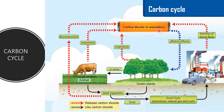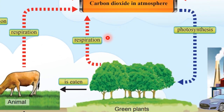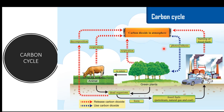During respiration, all plants and animals release carbon dioxide back to the air. In short, photosynthesis removes carbon dioxide from the air, whereas respiration, decomposition, and combustion return carbon dioxide back into the atmosphere. These processes maintain the content of carbon dioxide in the atmosphere at a rather fixed level of 0.03% by continuously taking carbon dioxide from the air and returning it to the air.